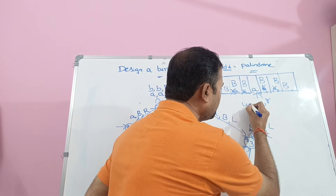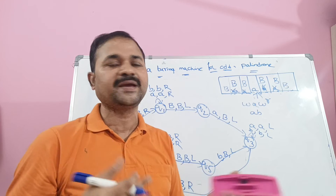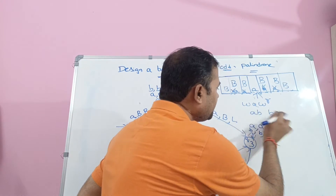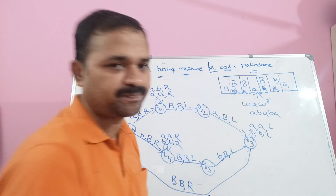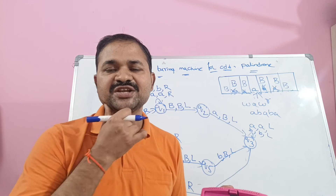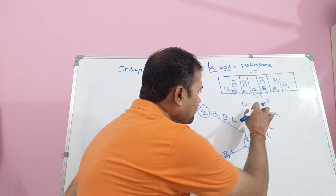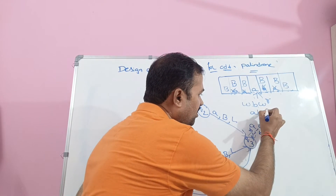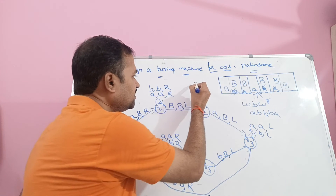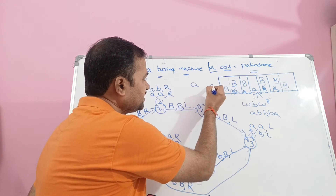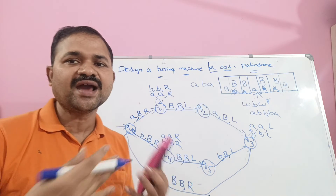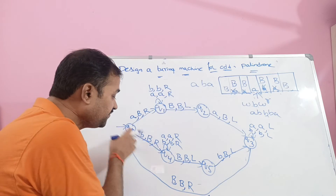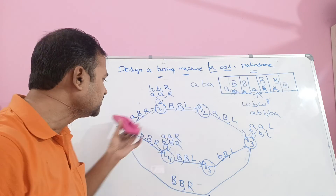In between W and W^R we may have either A or B. For example, let W be 'AV', then W^R is 'BA'; in between A, V and B we can have either A or B, because our string contains only two symbols: A and B. So if we have A in the middle we move in one path, and if we have B we move in another path.